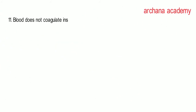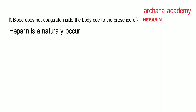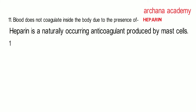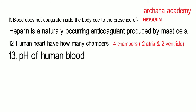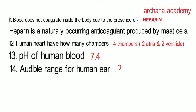Normal blood volume in an adult human is 5 liters. How many chambers does our heart have? There are 4 chambers — 2 atria and 2 ventricles. What is the pH of our blood? The pH of blood is 7.4, meaning our blood is slightly alkaline or basic.